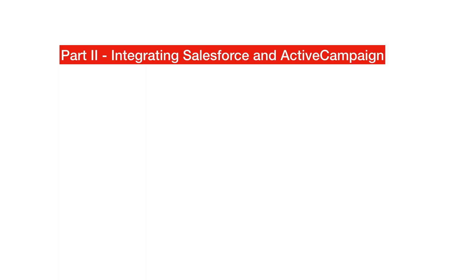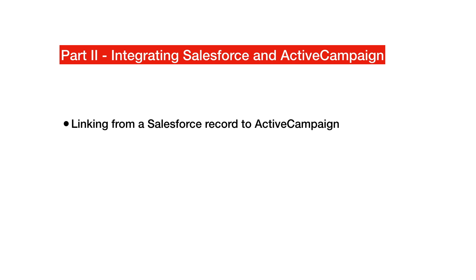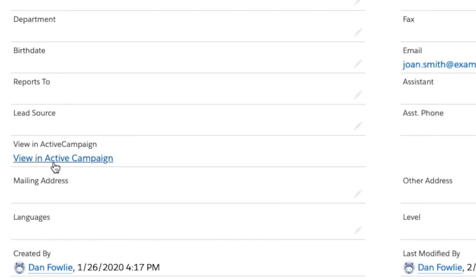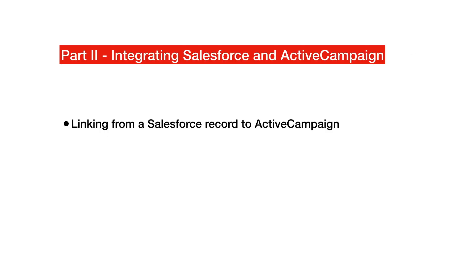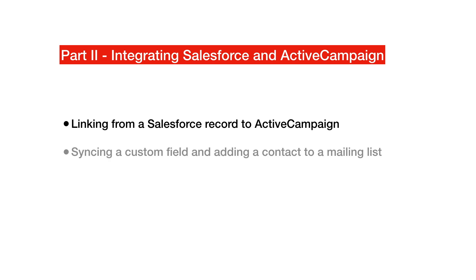In this video, we're going to look at two simple additions to the integration. Firstly, we're going to look at how we link a record in Salesforce to ActiveCampaign by allowing you to jump from one record in the browser to the other system. And secondly, we're going to look at how we can use a custom field in each system as a trigger to add a contact to a mailing list inside ActiveCampaign.